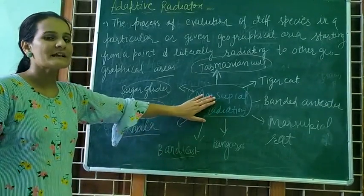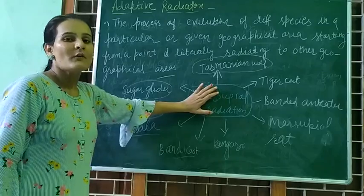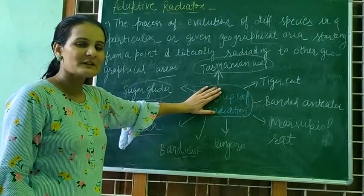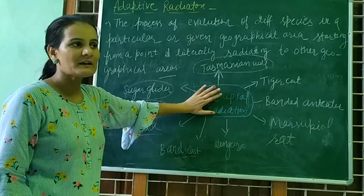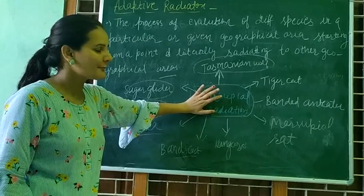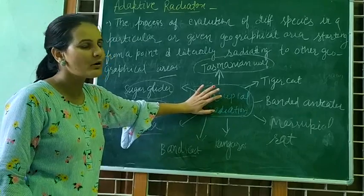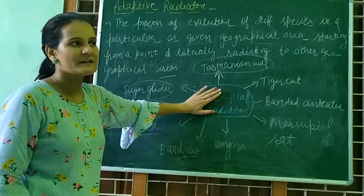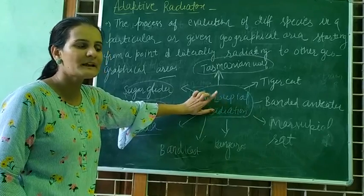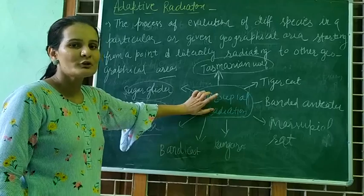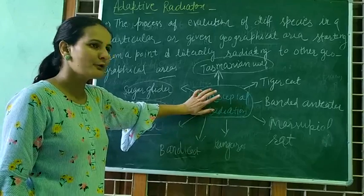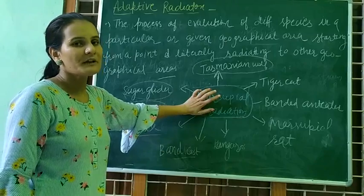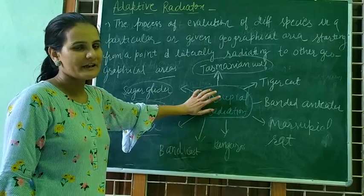First, it was one place, then different species evolved and spread to different places. Another example is Darwin's Finches. In their beaks, evolution has occurred. There are insectivorous beings, and there are vegetarians — some eat insects, some eat plants.